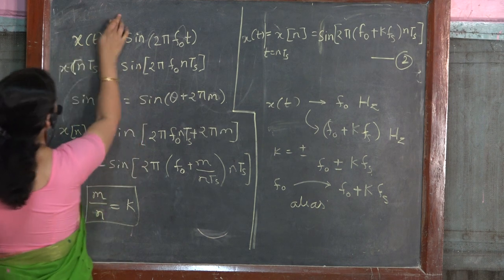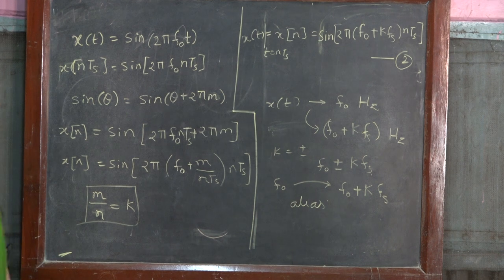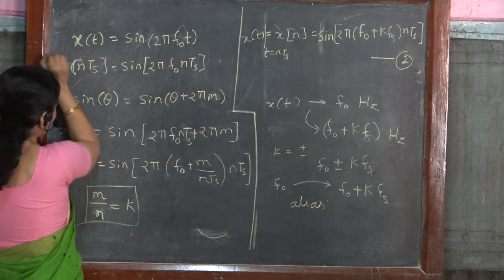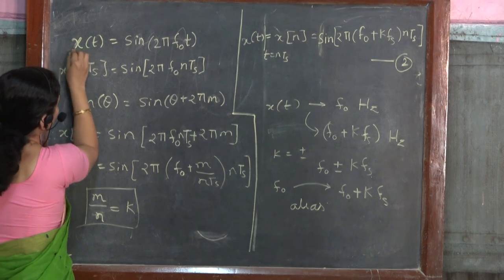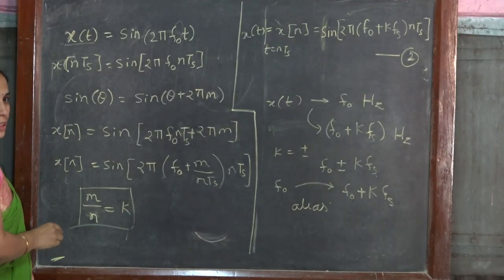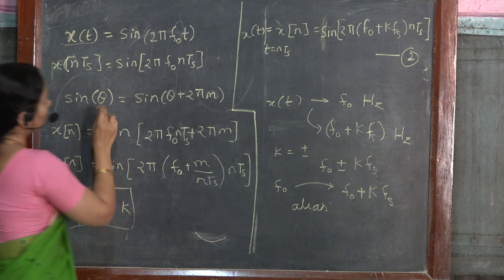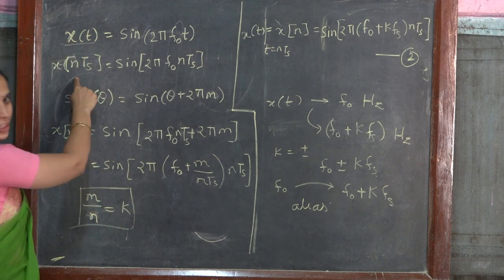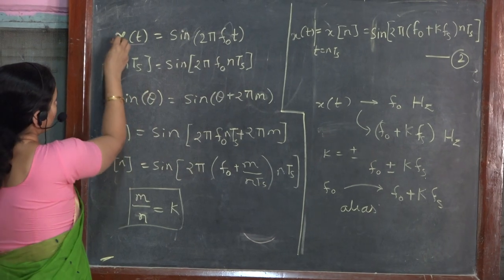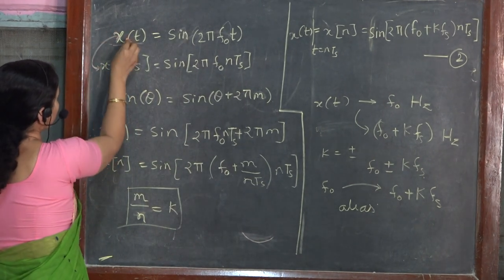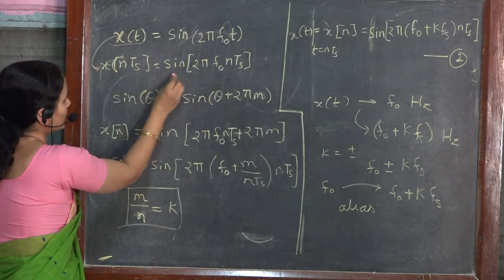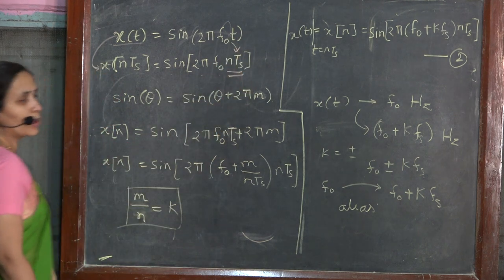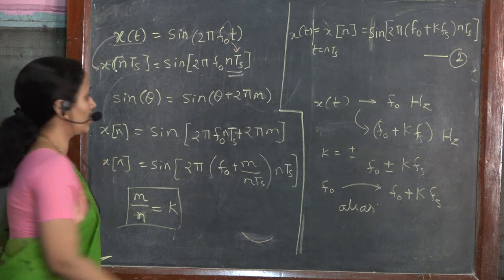After going through the graphical description, let us try to mathematically analyze that. Let us revisit that x of t equals sin(2π f₀ t). This signal is sampled at t equals nTs. Its equivalent form we are going to get as x of n equals x(nTs), which is sin(2π f₀) calculated at t equals nTs.